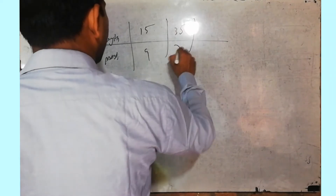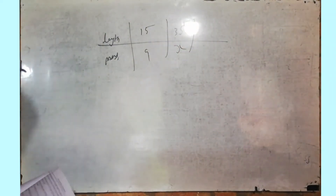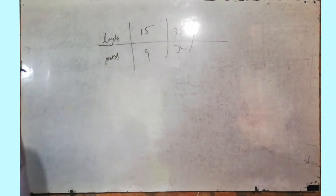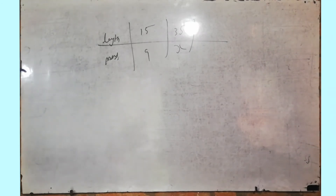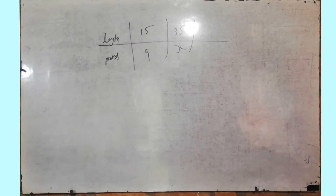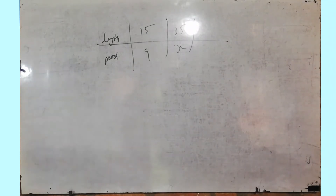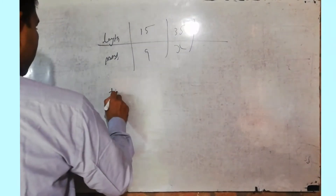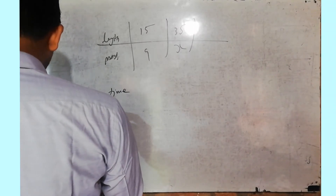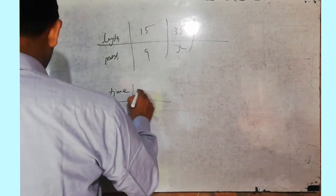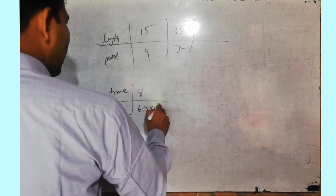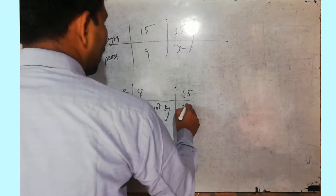Question number 10: in 8 days the Earth picks up 6.4 × 10^7 kg of dust from the atmosphere. How much dust will it pick up in 15 days? Very easy — put days in the time column and dust in the dust column. 8 days gives 6.4 × 10^7 kg; find X for 15 days.